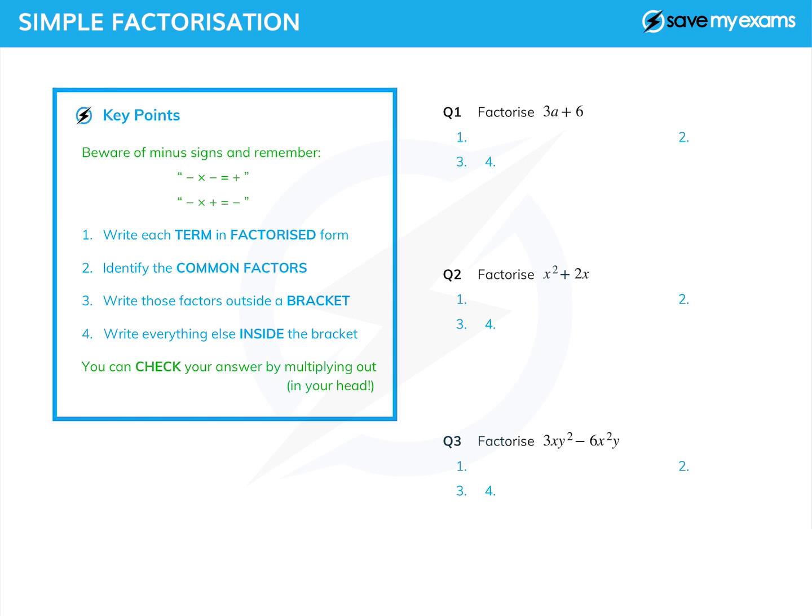The first thing we're going to do is write each term in our expression. If we look at question 1 again, there are two terms separated by a plus sign or possibly a minus sign in a different expression, and we're going to write those in factorized form.